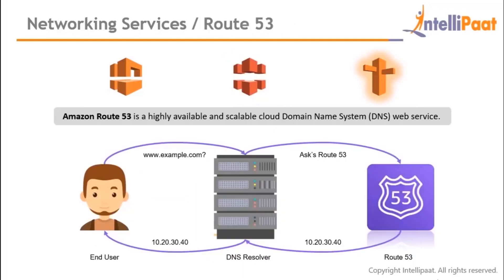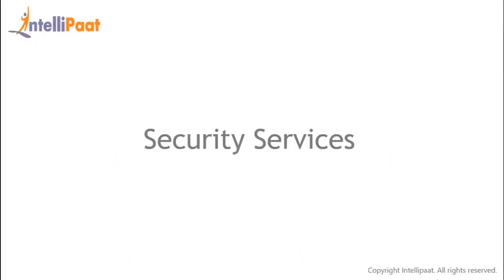Amazon Route 53 is a highly available and scalable cloud Domain Name System (DNS) web service. DNS acts like a telephone book for the internet, storing IP addresses and converting domain names to IPs. When a user requests example.com, the DNS resolver checks and, if unknown, queries Route 53, which converts the domain name to an IP address, returns it to the resolver, and the user accesses the web service via that IP.